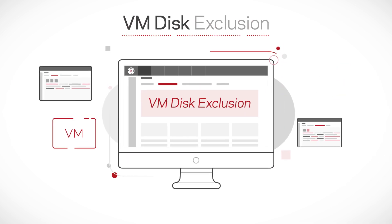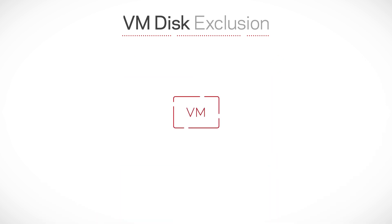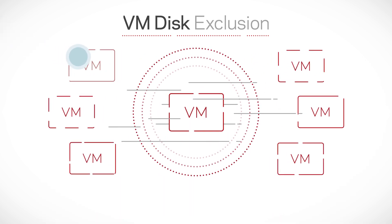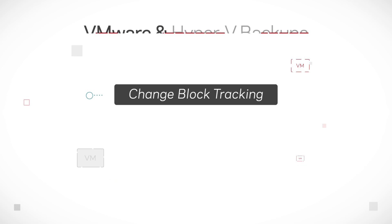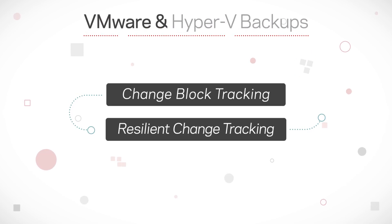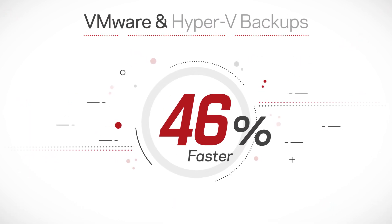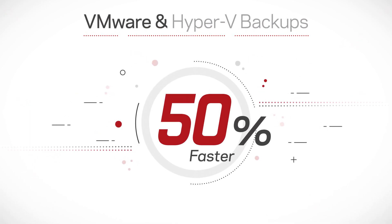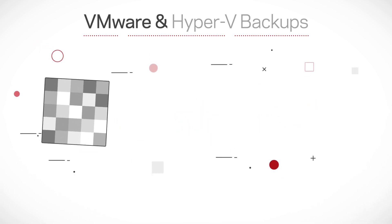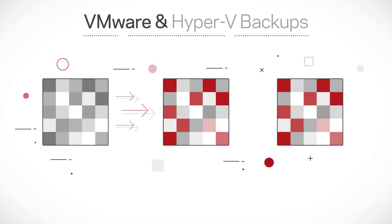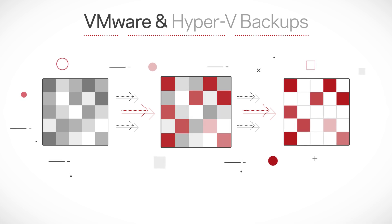And if you're serious about backup performance, Backup Exec offers features like VM Disk Exclusion that allows you to unselect individual VM disks from your backup job, change block tracking and resilient change tracking that make VMware and Hyper-V workload backups up to 50% faster by allowing you to backup only the modified blocks instead of the entire virtual machine.